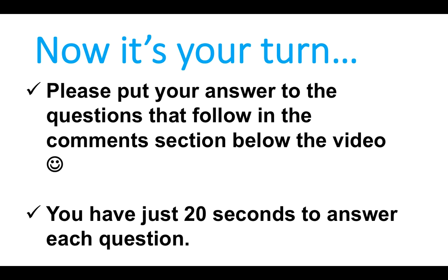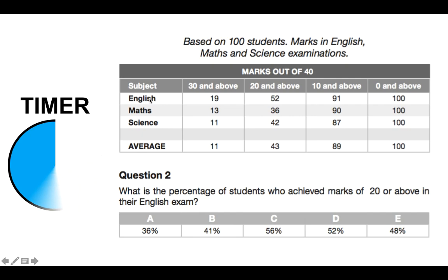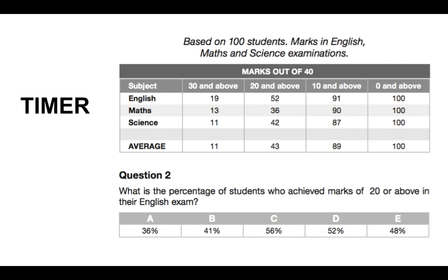You've got 20 seconds per question — that's quite tough. If you need a bit of extra time, please pause the video. Based on 100 students with marks in English, maths and science out of 40: what is the percentage of students who achieved marks of 20 or above in their English exam? You've got 20 seconds. Is it A 36%, B 41%, C 56%, D 52%, or E 48%?